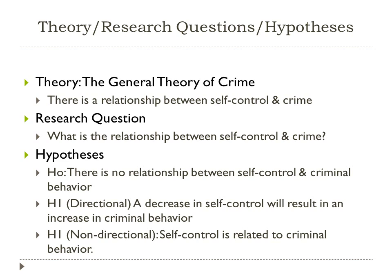Here's an example of theory, research questions, and hypotheses all put together. The theory — the General Theory of Crime — states there is a relationship between self-control and crime. A research question based on that theory is: 'What is the relationship between self-control and crime?' The null hypothesis would be: 'There is no relationship between self-control and criminal behavior.' A directional hypothesis would be: 'A decrease in self-control will result in an increase in criminal behavior.' A non-directional hypothesis would simply state: 'Self-control is related to criminal behavior.'